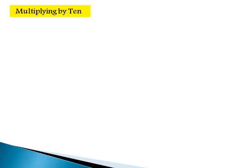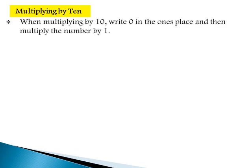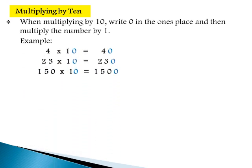Students, do you know the 10 times table? 10 ones are 10, 10 twos are 20, 10 threes are 30, 10 fours are 40, and so on. We notice that each product in the 10 times table is the same number with a 0 added to it. So the rule says: when multiplying by 10, write 0 in the ones place and then multiply the number by 1. For example, 4 times 10 — first multiply 4 with 1 equals 4, and put a 0 at the end, so the answer equals 40.